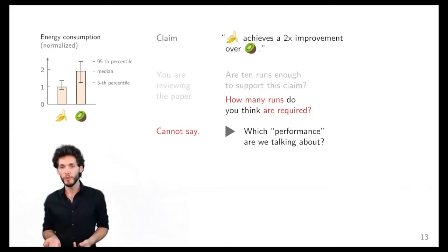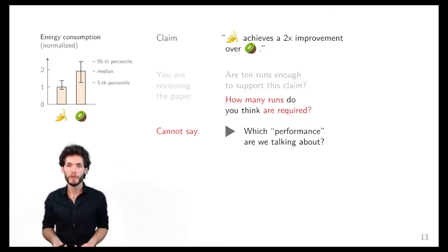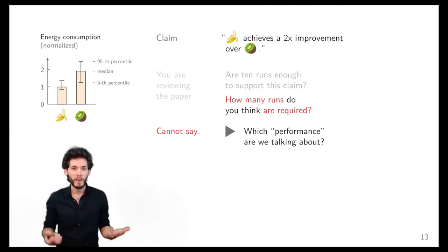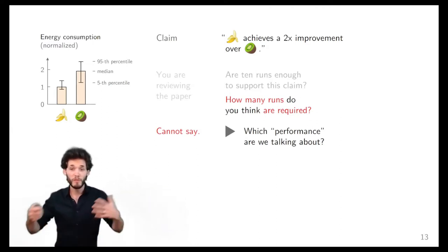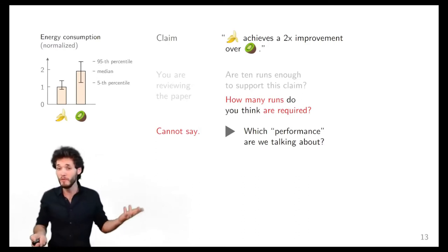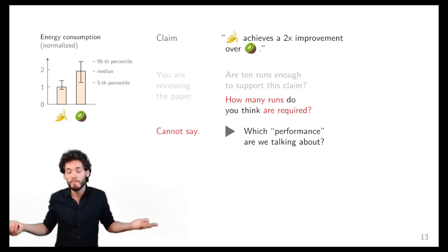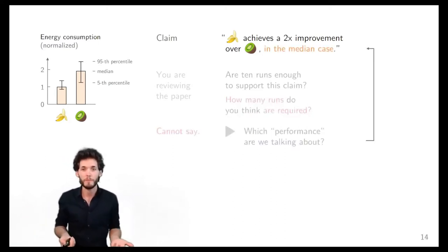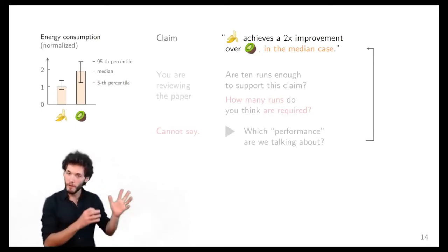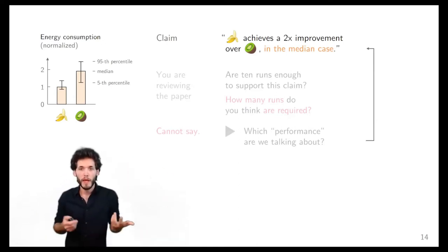We say '2x improvement,' but what does that mean? 2x improvement over what? Are we talking about the average case, the worst case? It's really underspecified, and yet it's a very common claim to find in an abstract or conclusion of a paper: '2x improvement over the state of the art.' When you think about it, it's really not clear. But let's say for a second we clarify the claim and say: '2x improvement in the median case.'